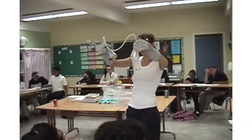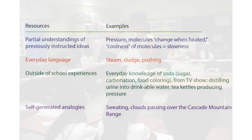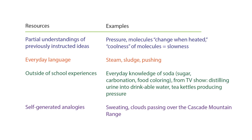Here's a list of what Anna heard as her students talked about the soft drink distillation. She heard partial understandings of previously instructed ideas, like the notion that molecules change somehow when heated. She heard everyday language, like steam, sludge being left over in one of the flasks, and steam being pushed. She heard references to outside-of-school experiences — everyday knowledge of soda containing sugar, carbonation, and food coloring. Her students also created self-generated analogies, like sweating or clouds passing over the Cascade mountain range. Anna referred to these ideas repeatedly throughout the unit to help students make sense of the distillation.